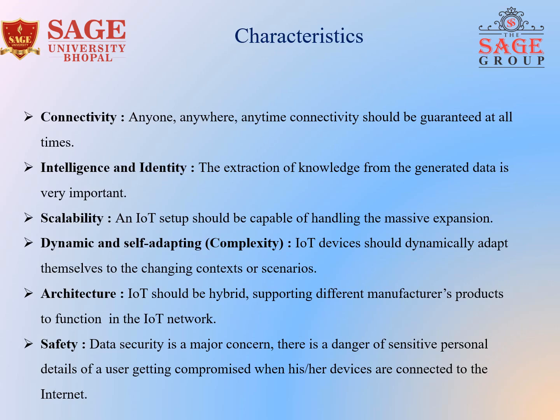The fifth one is architecture. IoT architecture cannot be homogeneous in nature; it must be hybrid, supporting different manufacturing products to function in the IoT network. The last characteristic is safety. There is a danger of sensitive personal details of a user getting compromised when all devices are connected to the internet. This could cause a loss to the user, hence data security is a major challenge. Besides these, equipment involved in a huge IoT network may also be at risk, therefore equipment safety is very crucial.